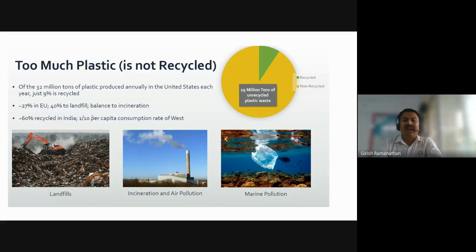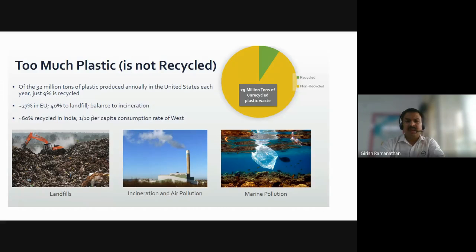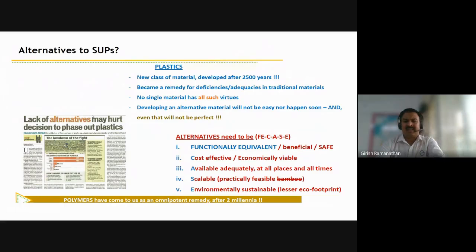India is at only one tenth of the per capita plastic consumption of western countries, so there is still large room for plastic growth in India. The plastic ends up in landfills, causes air pollution when insolated, or becomes a marine pollutant. The alternative to plastics should be a functional equivalent — very cost effective, available everywhere, scalable, and most importantly environmentally sustainable, meaning it should have a lesser eco-footprint.